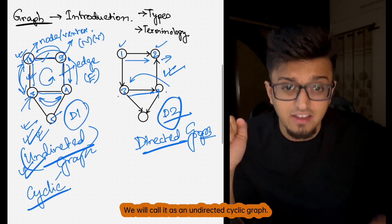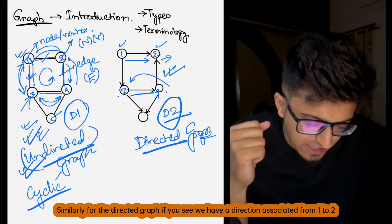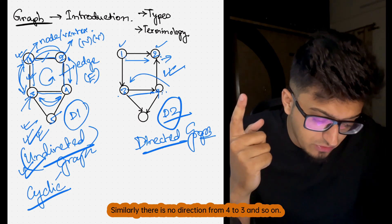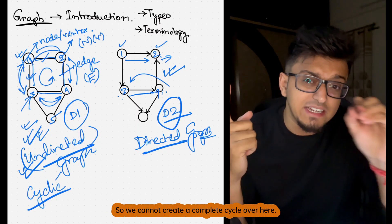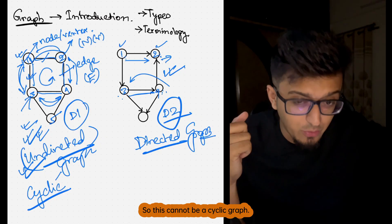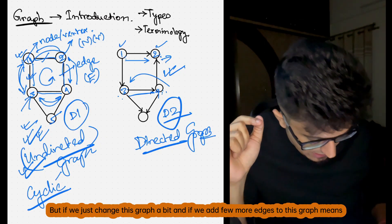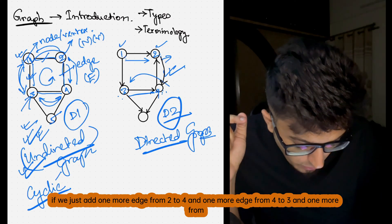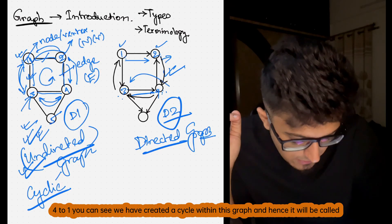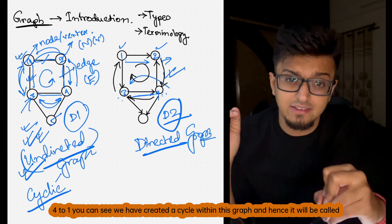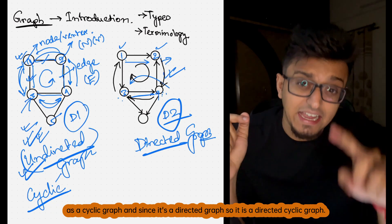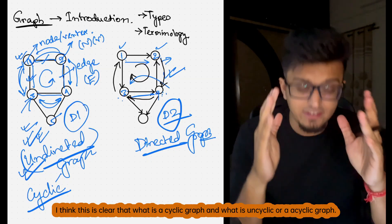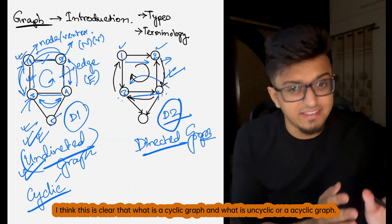For the directed graph, we have a direction from one to two but no direction from two to four or four to three, so we cannot create a complete cycle — it is not a cyclic graph. But if we add a few more edges, for example an edge from two to four, from four to three, and from four to one, we create a cycle within the graph. Hence it will be called a cyclic graph, and since it's directed it becomes a directed cyclic graph.